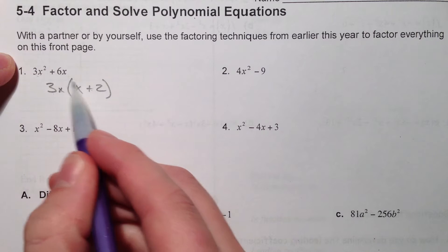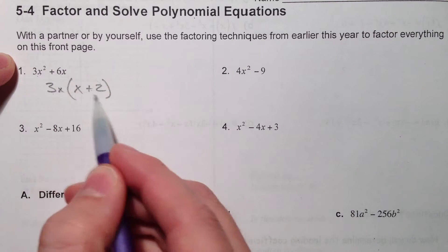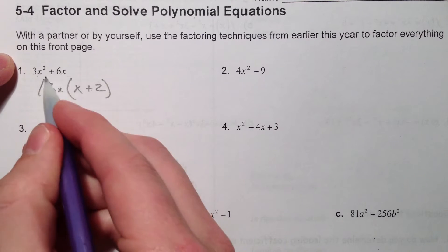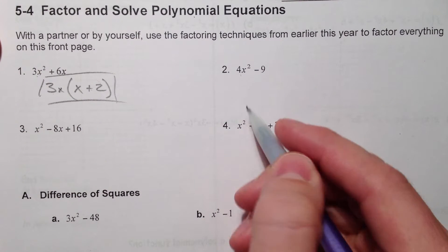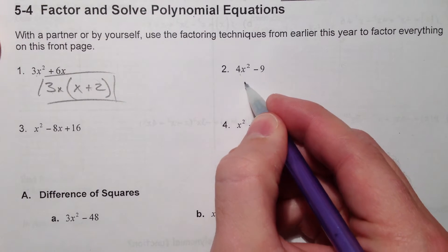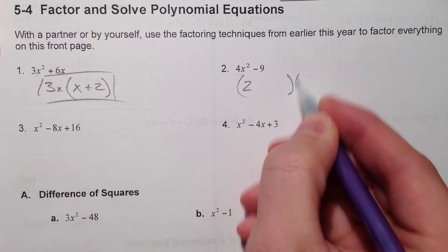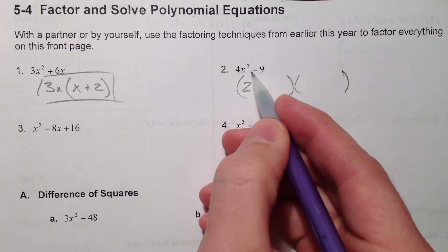Remember also that if you multiply this back out, if you distribute it, you should get what you originally had. This is a special kind of factoring. It's called the difference of squares. It doesn't have a middle term. Notice how it just has two terms.